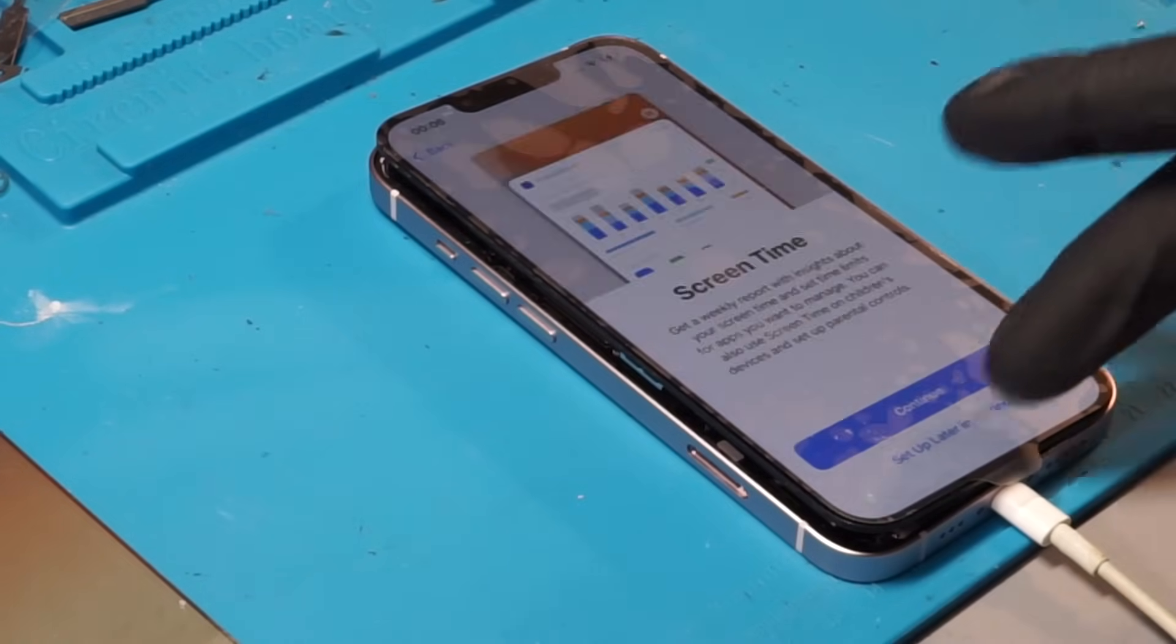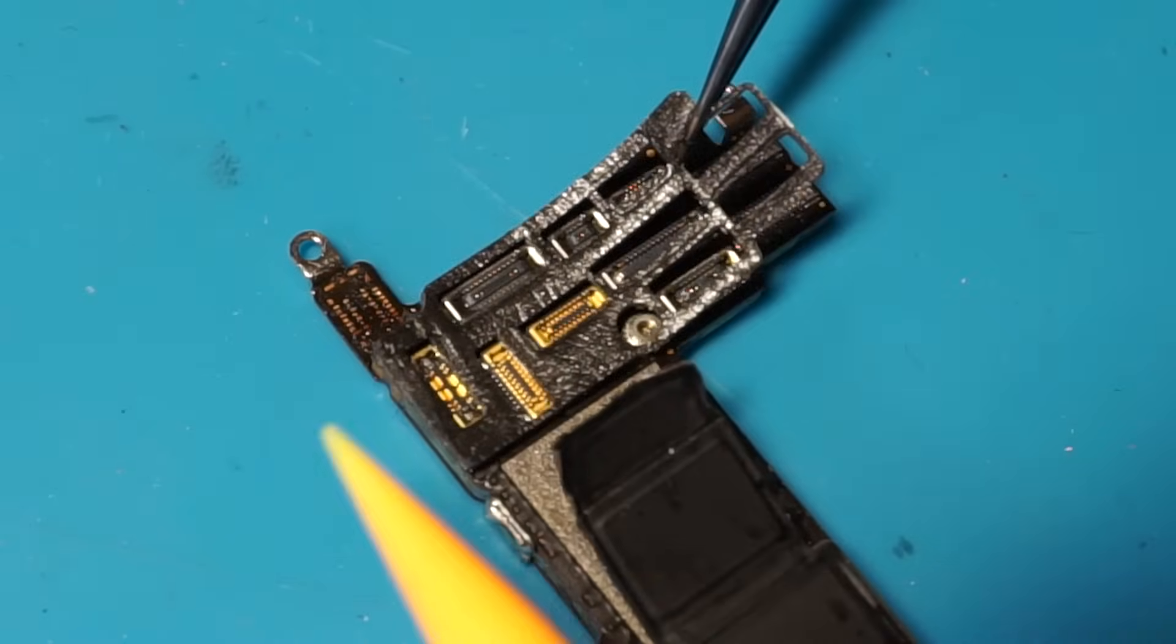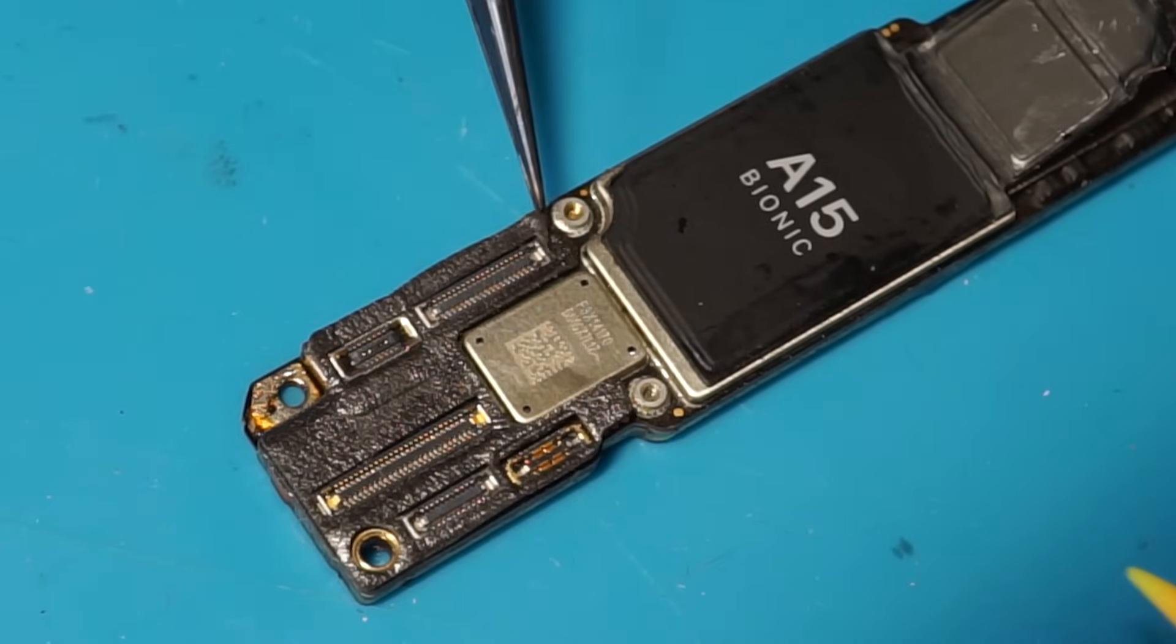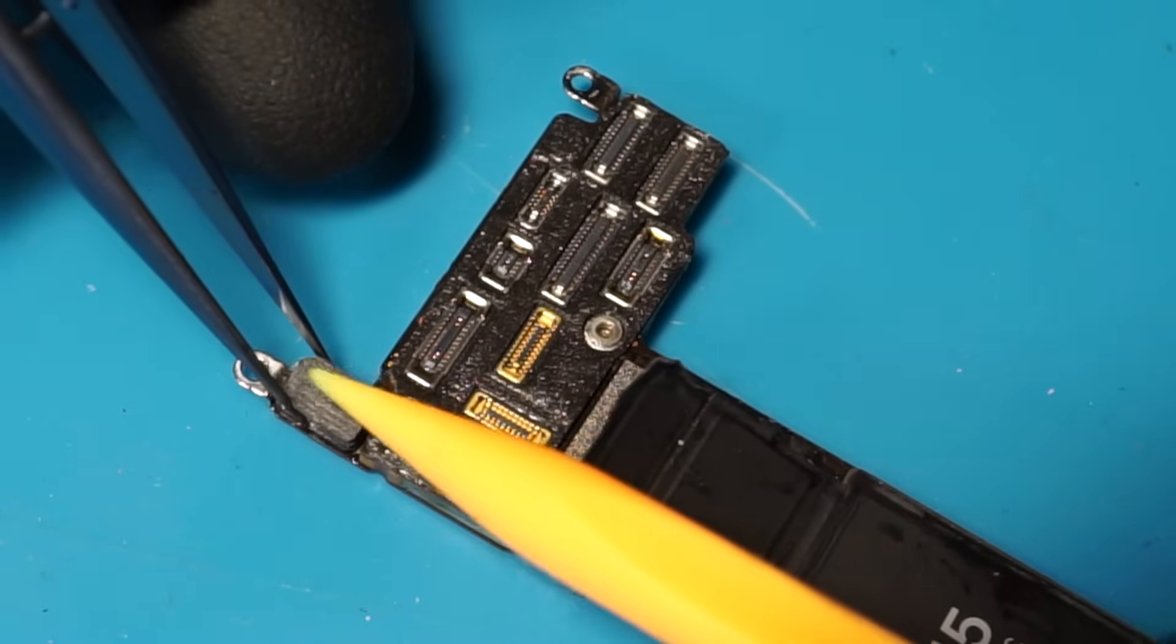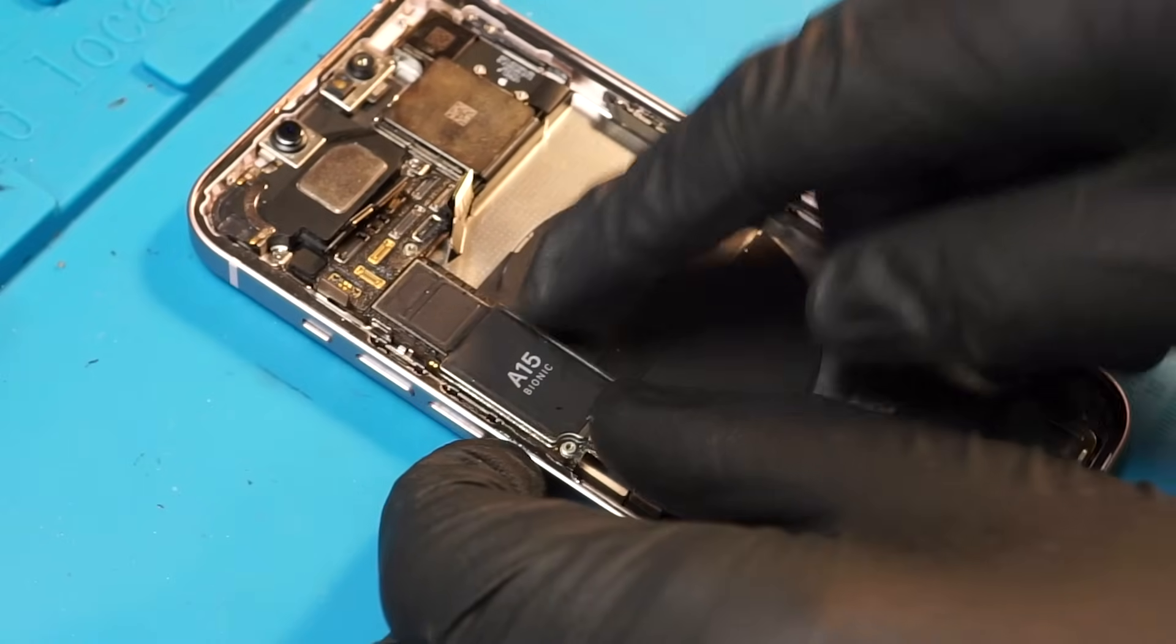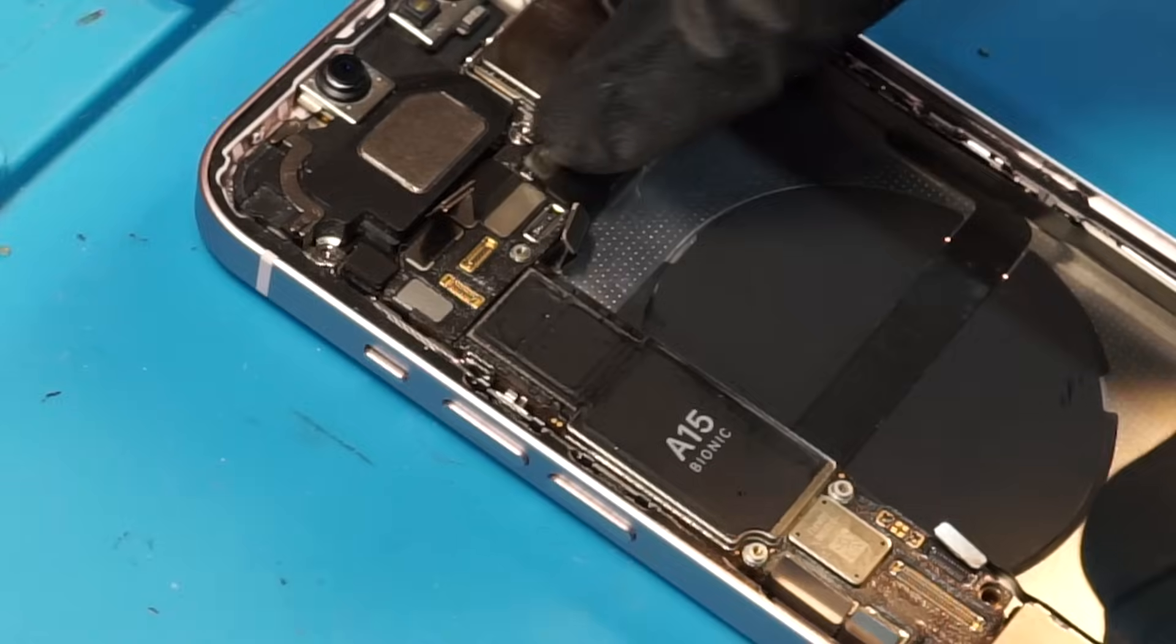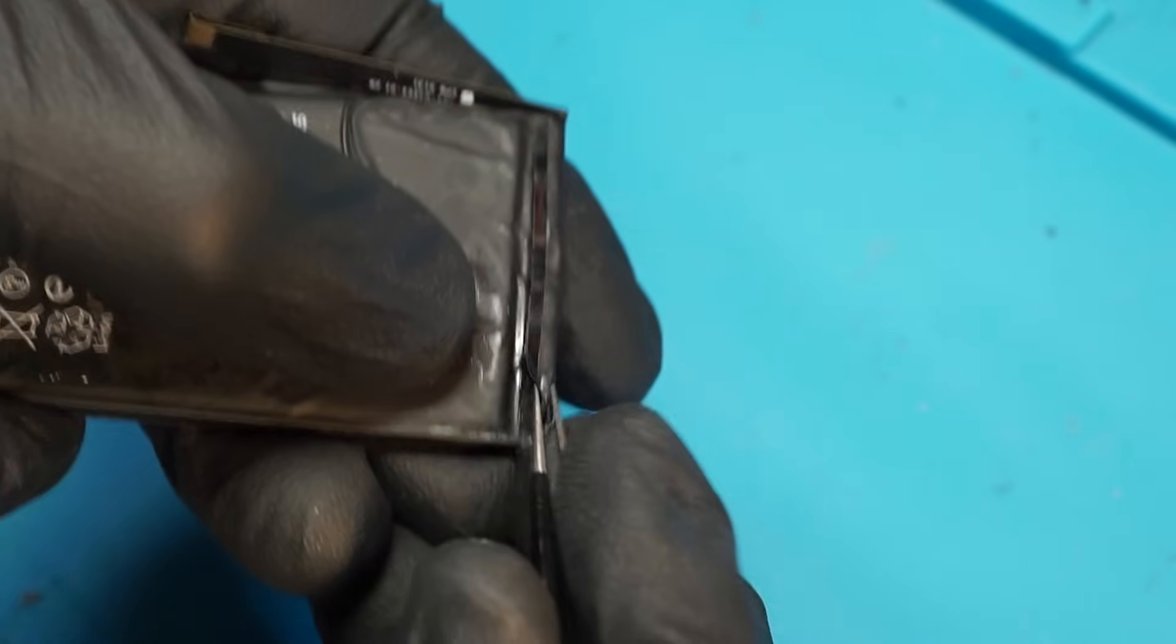Since we replaced both the camera and the screen, the phone displays these messages. Fortunately, the camera can be recalibrated to remove the warning. However, because the proximity sensor is paired with the original screen, the phone won't recognise the screen as genuine, even though it actually is. Now that the logic board looks more presentable, it's time to put it all back together again. We want the phone to work and look as good as new, so that means we need a new battery.